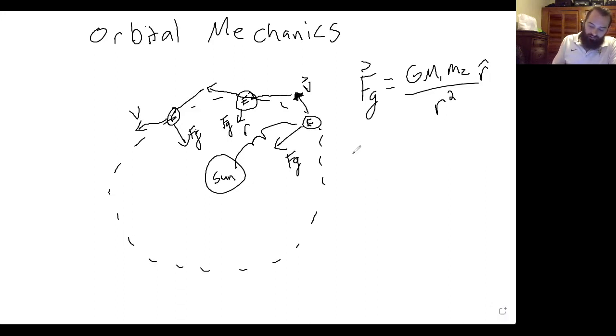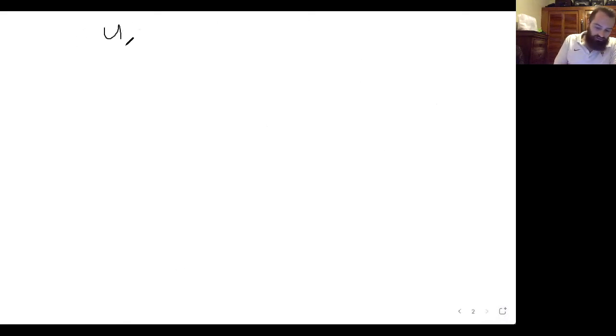Now when something is moving around in a circle, we can define that motion as a special type of motion called uniform circular motion. And so for now, we'll just assume that the earth's orbit is circular. It's ever so slightly eccentric, making it an ellipse instead of a circle, but just to keep the math easy, we'll assume that it's a circle.